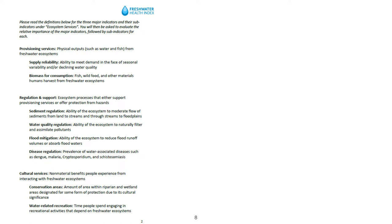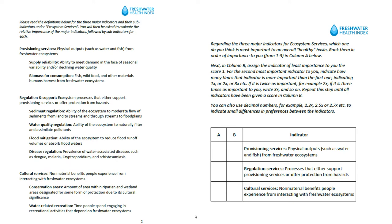Here is an example of a set of comparisons. In this example, stakeholders are asked to compare the three major freshwater ecosystem services of the FHI, which are provisioning, regulation, and cultural services. Stakeholders first rank services according to their importance, based on their own perception. Then stakeholders provide information on how many times one particular service type is more important than the other.